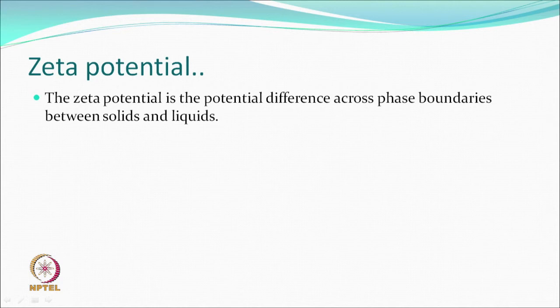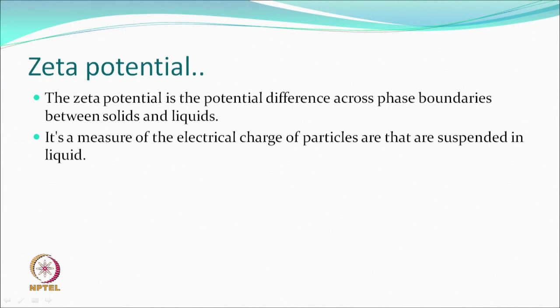The zeta potential is defined as the potential difference across boundaries of solids and liquids. It could be a particle suspended in an aqueous system, or in our case a textile which is a solid now in an aqueous system - so you have a liquid-solid interface situation. It is also defined as a measure of electric charge on particles suspended in a liquid. Theoretically this is defined for any solid and any liquid based on their nature.